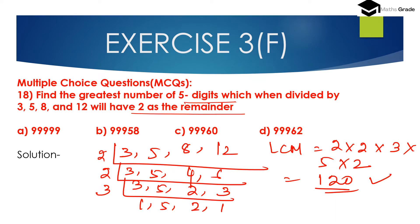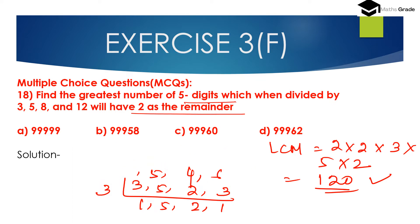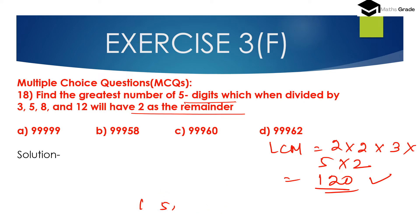The LCM is 120. The greatest number of 5 digits is 99,999. We have to divide this number by 120.